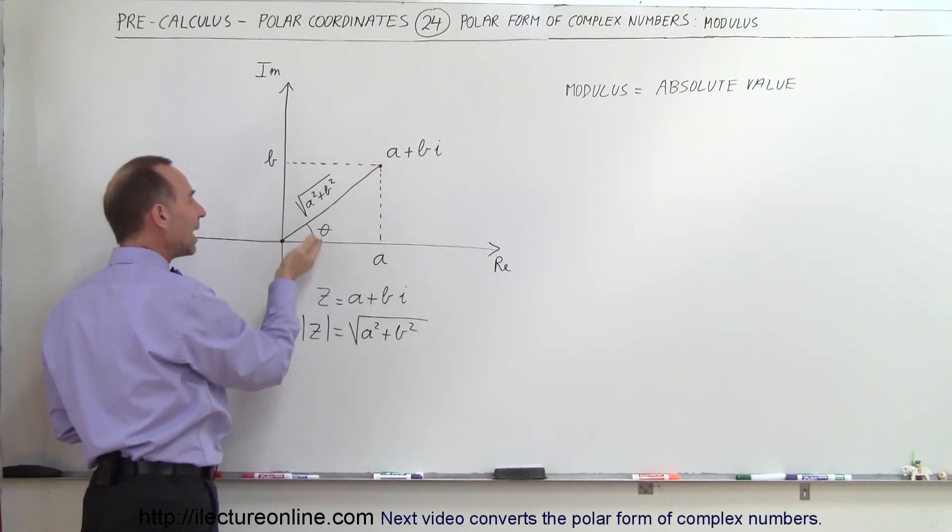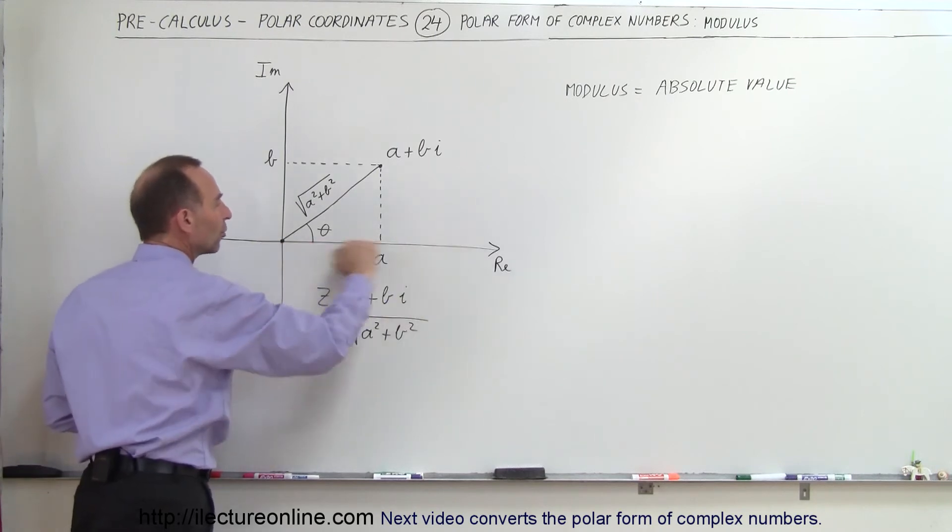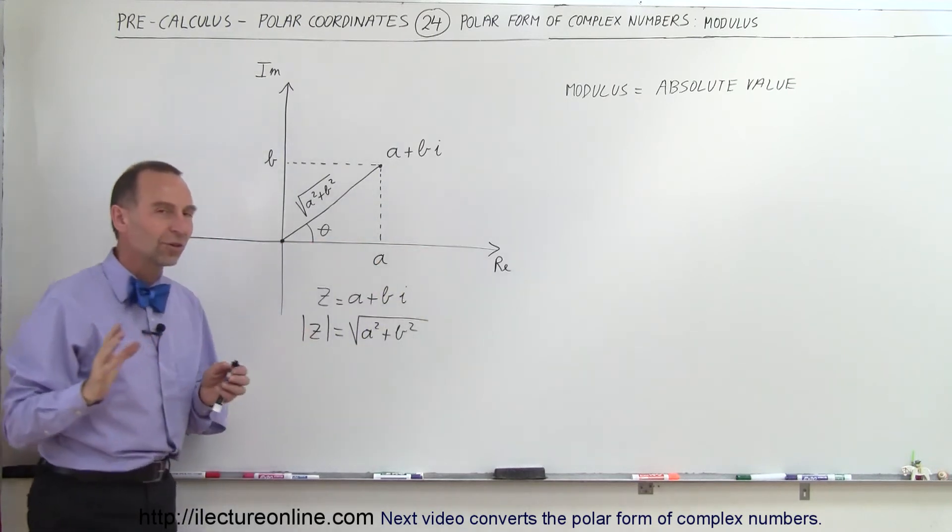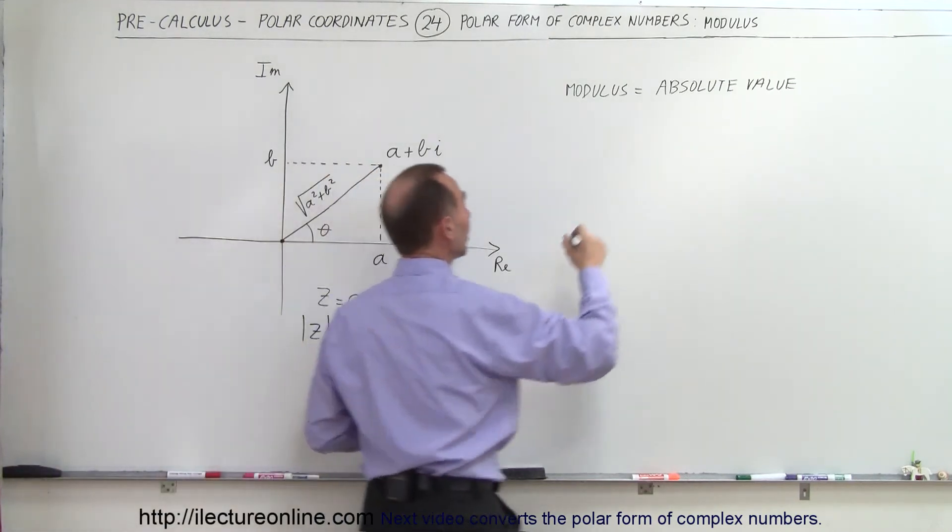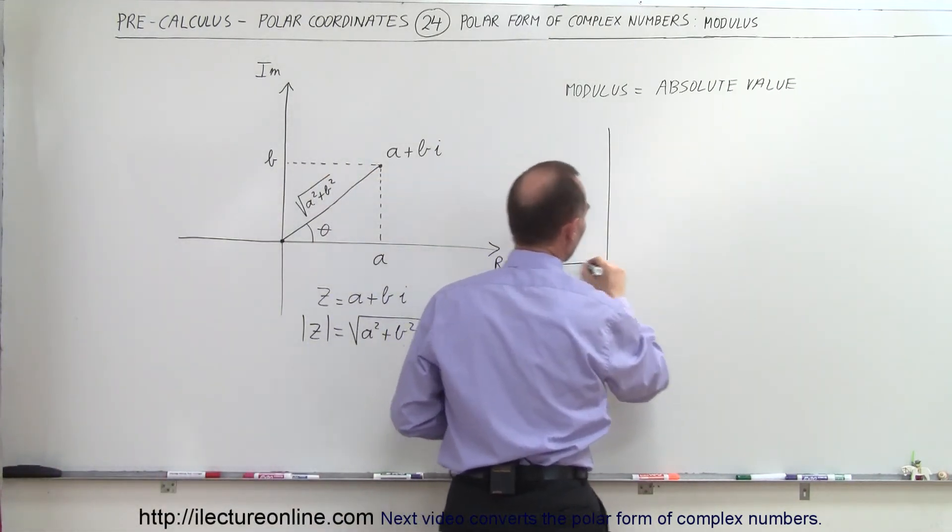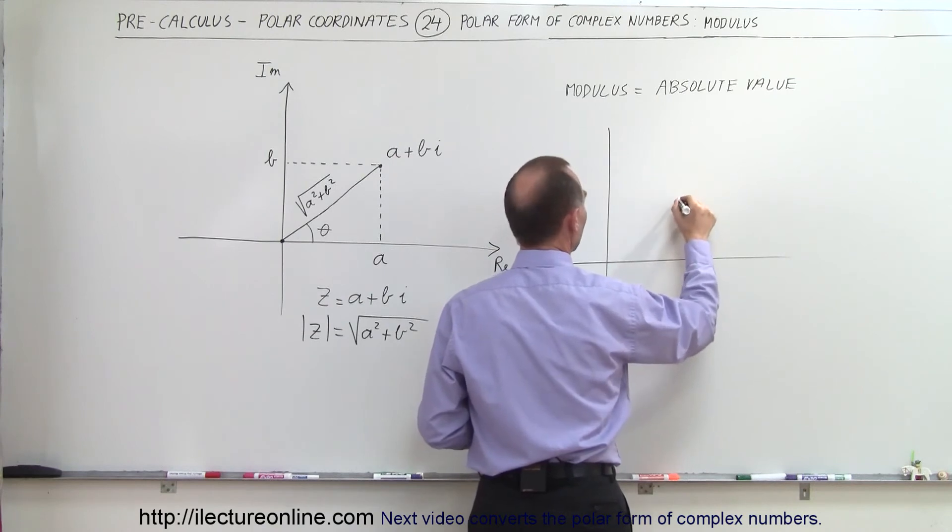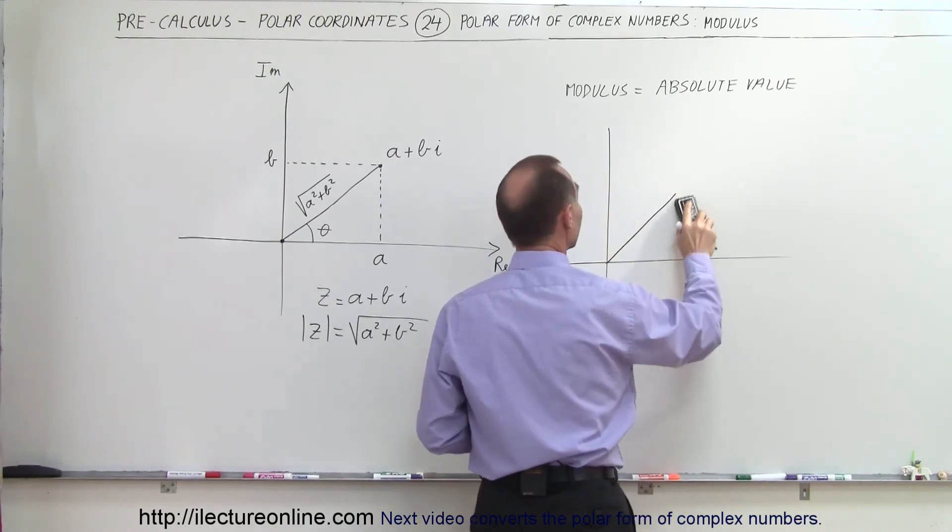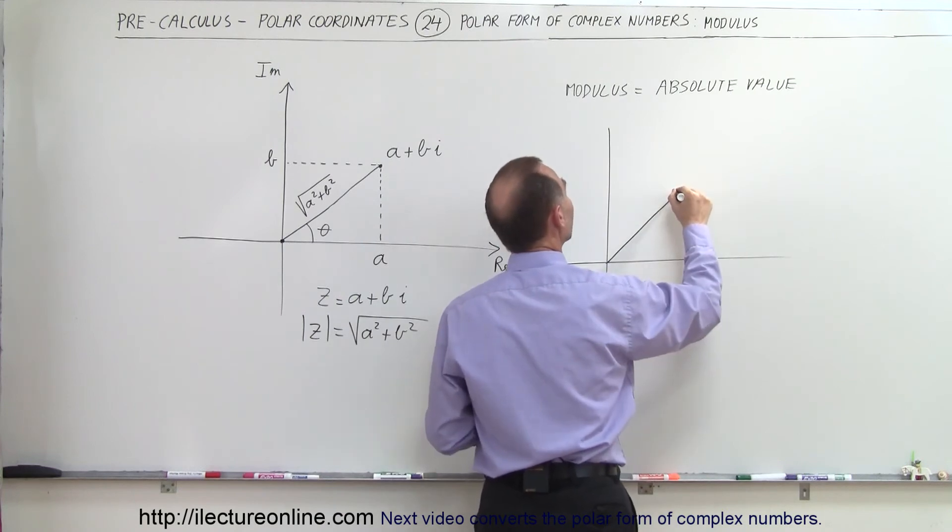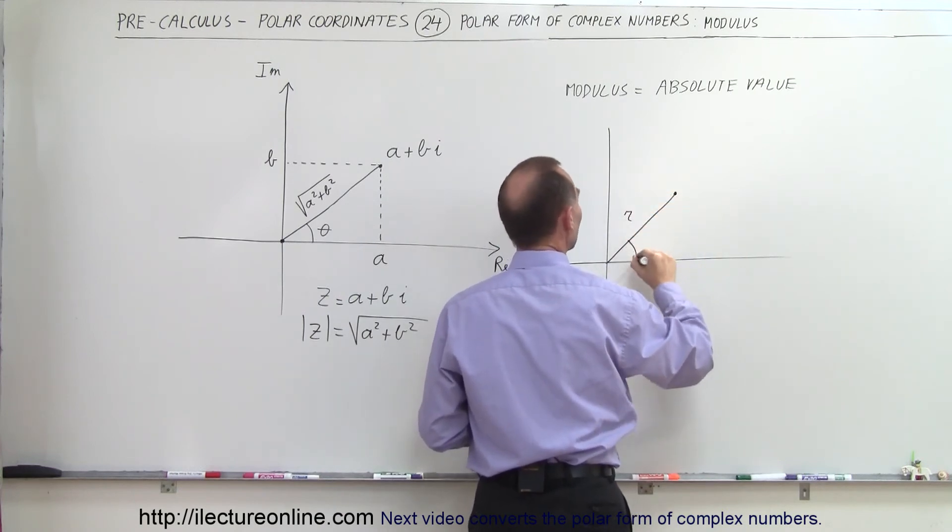We also have the angle relative to the horizontal axis, and you can see the similarity between this and polar coordinates. If we draw the polar coordinates on the axis like this and pick a point right here, this would be the radius, and this would be the angle theta.